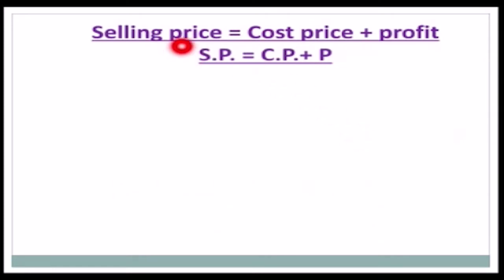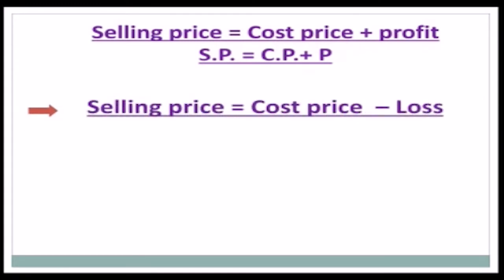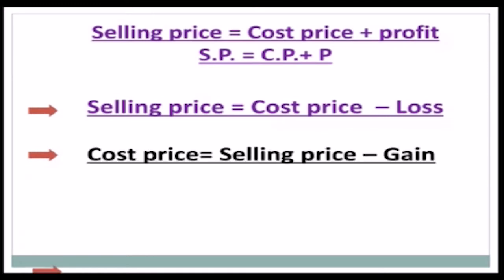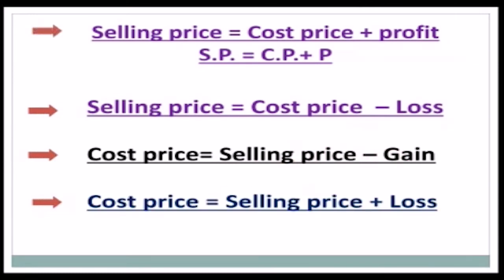Additional formulas: Selling Price = Cost Price + Profit (when there is a profit); Selling Price = Cost Price − Loss (when there is a loss). For finding cost price: Cost Price = Selling Price − Gain; Cost Price = Selling Price + Loss.